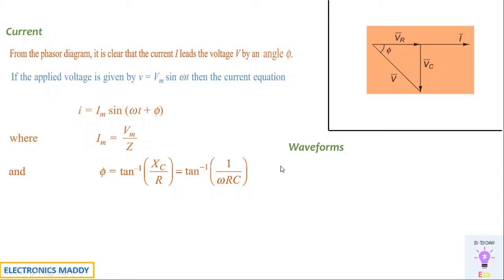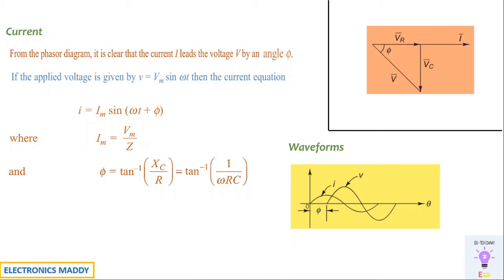A very important aspect is the waveforms — how voltage and current waveforms are drawn. If voltage V is a sinusoidal signal starting at some point, current I is leading with respect to V, so I will start much beyond where the voltage waveform starts. As a result, phi is the angle between I and V. Initially, current will be leading with respect to voltage.